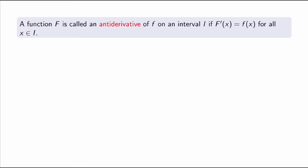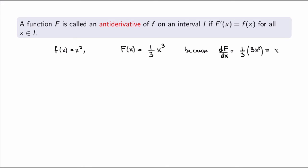More precisely, a function capital F is called an antiderivative of f on an interval I if the derivative of capital F of x is equal to f of x for all x on the interval. So in my previous example, if I start with the function f of x equals x squared, then I can calculate an antiderivative relatively easily. It's easy to convince yourself that one-third of x cubed is an antiderivative of x squared, because if I calculate the derivative d(capital F)/dx, I use the power rule — the threes cancel and I end up with x squared, which is indeed the function I started with.